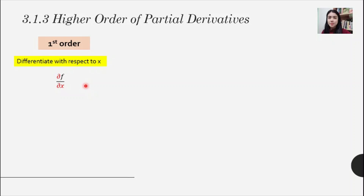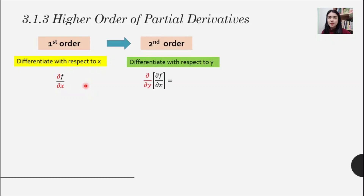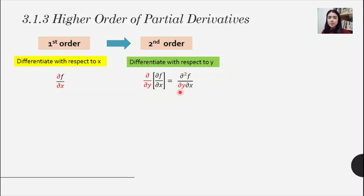Now suppose we have the first-order derivative with respect to x — that is ∂f/∂x. What happens if we then differentiate with respect to y for the second order? Take the answer of the first order, put it inside the bracket, and apply ∂/∂y. You can rewrite this as ∂²f/∂y∂x — the 2 is between ∂ and f because there are two ∂ symbols.